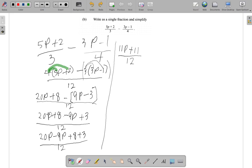20P plus 8, when you remove the bracket you have a negative 9P in here and a plus 3 here. So you have 20P minus 9P when you put like terms together, P's to P's, numbers to numbers, 8 plus 3.